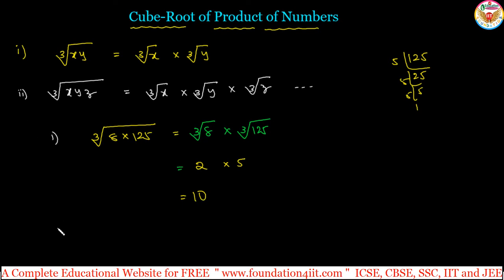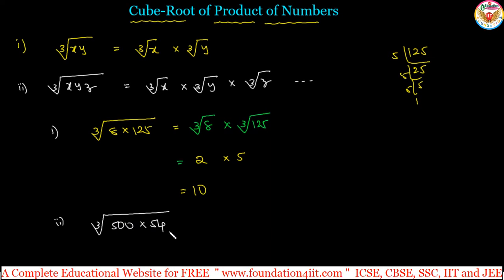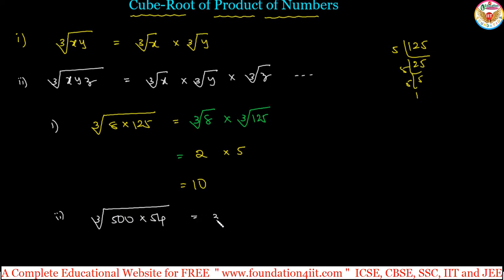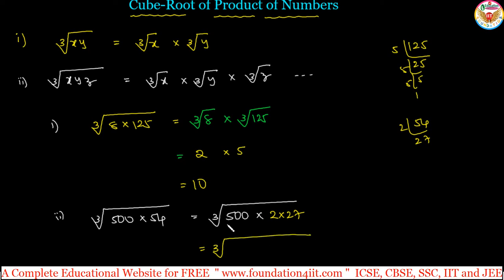In some cases we need to mix and split separately. For example, cube root of 500 multiplied by 54. We can split this into parts. For 54: 54 is 2 into 27. So cube root of 500 into 2 is cube root of 1000, which is a perfect cube.